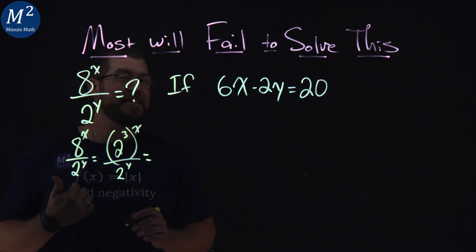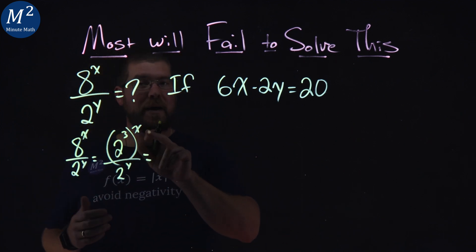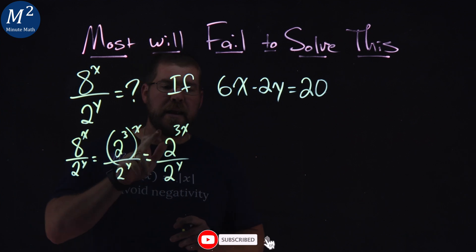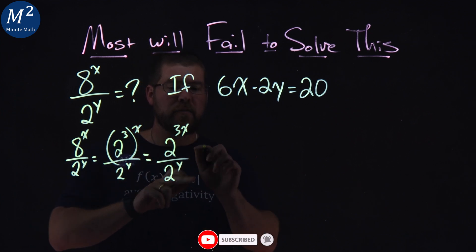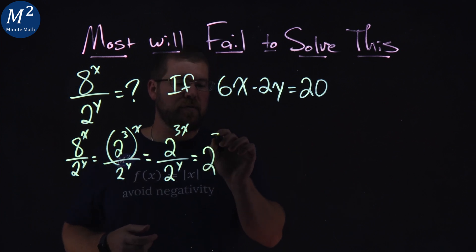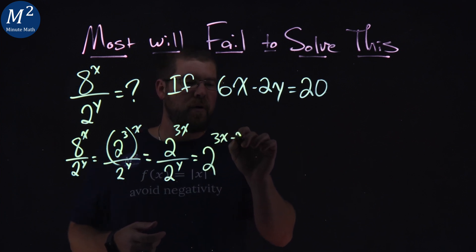And our rules of exponents state that when we have power raised to power, it's multiplied. So we have 2 to the 3x over 2 to the y. Now we have the same base with different exponents, but they're being divided here, we subtract the exponents. So we have 2 to the 3x minus y.